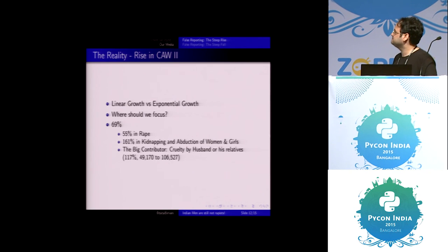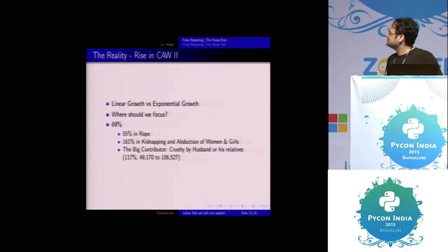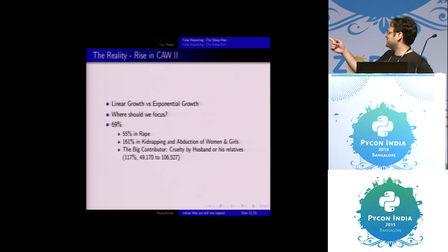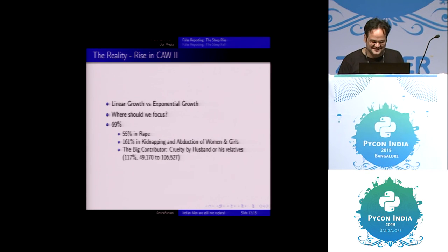Right. And, right. So that's the linear growth versus exponential growth. And where should we focus really, right. So that 55% came from rape. And you can look at the stats. Speak for themselves.